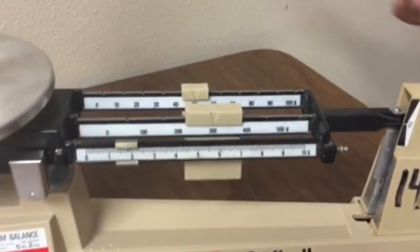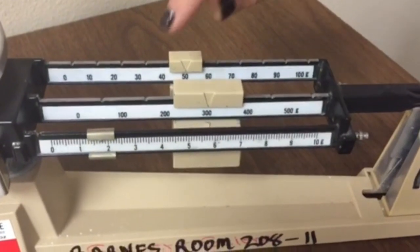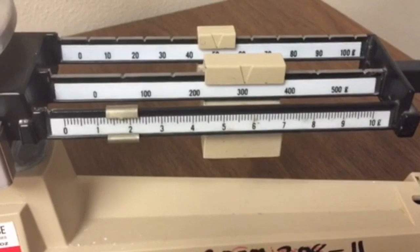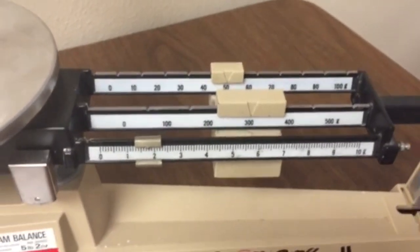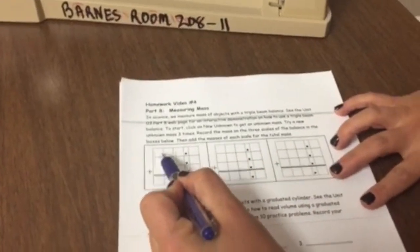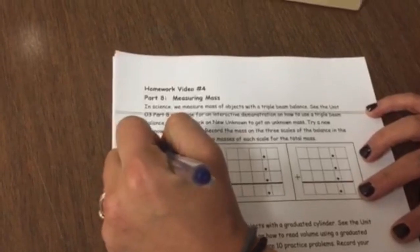So when I read this, I'm going to read it as 351 and seven tenths. When I write that on my paper, I'm going to use this top for my hundreds. So I'm going to write 300.